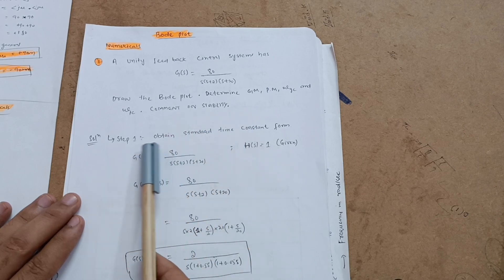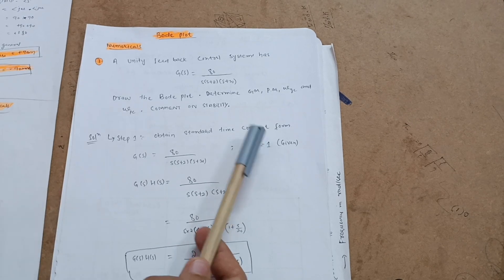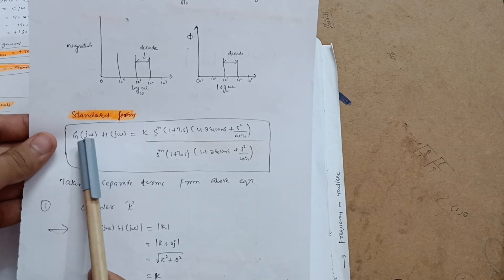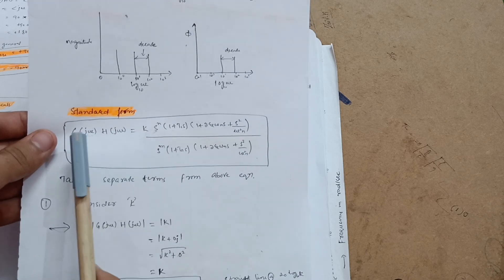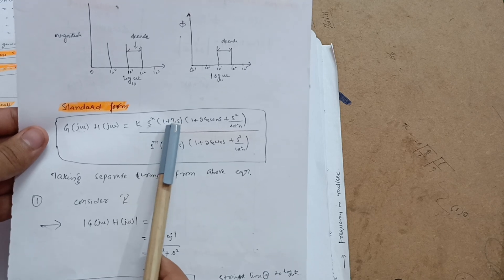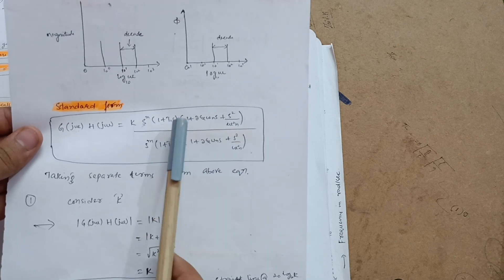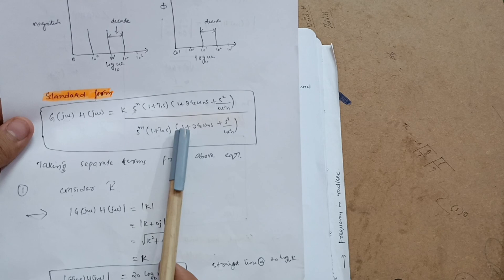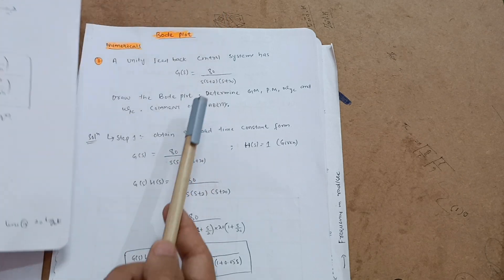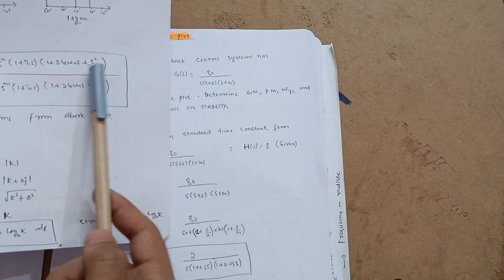To solve these problems there are only three steps. Step 1 is to obtain the standard time constant form. G(jω)H(jω) replaces s with jω. The standard form is K · s^n · (1 + T1·s) · (1 + 2ζ/ωn · s + s²/ωn²), where numerator terms are zeros and denominator terms are poles - as you already know from root locus.